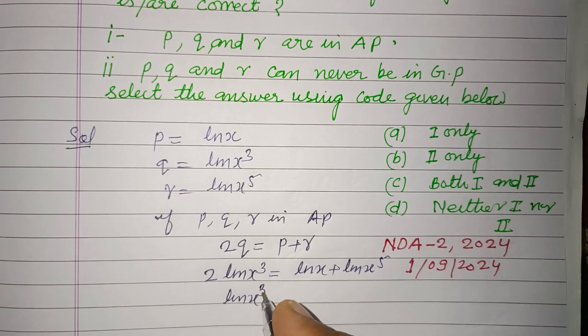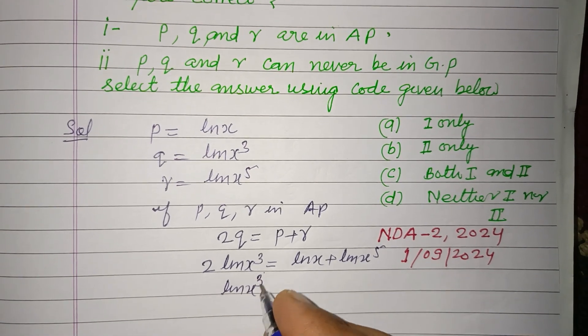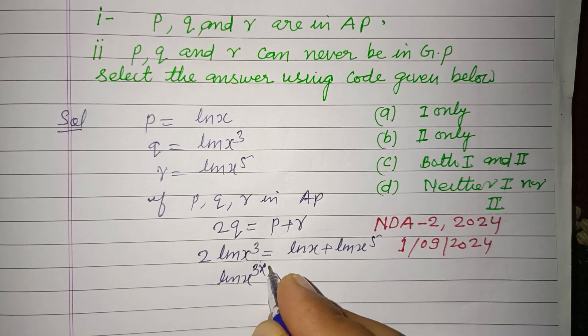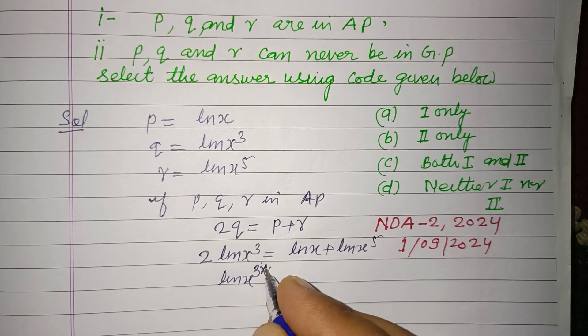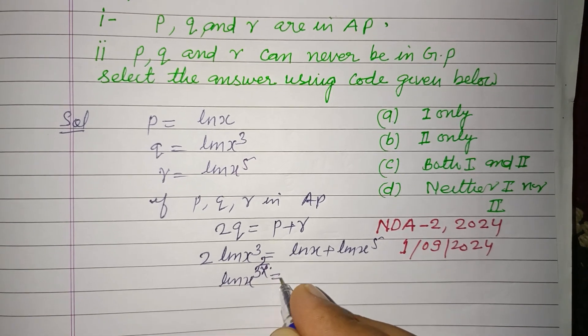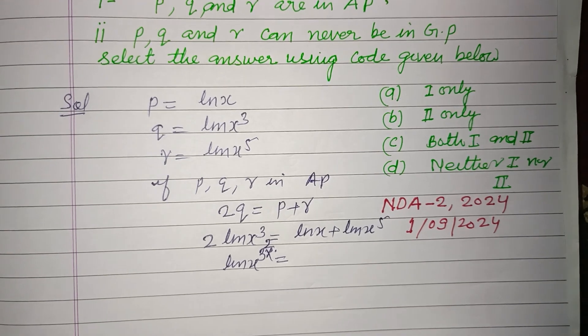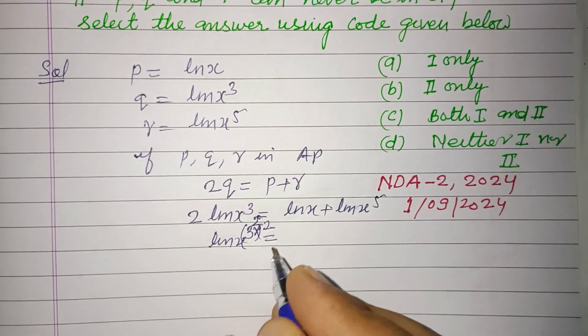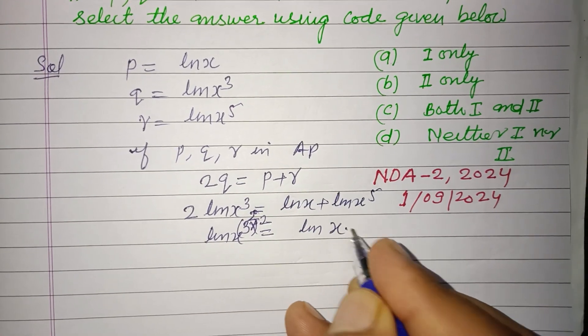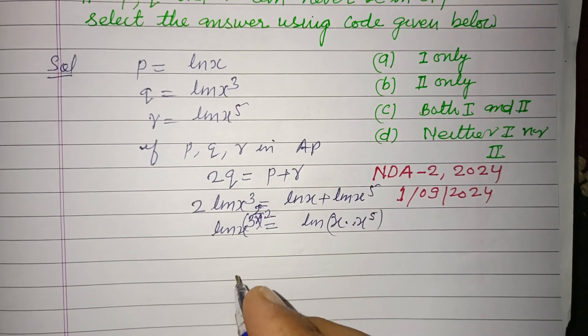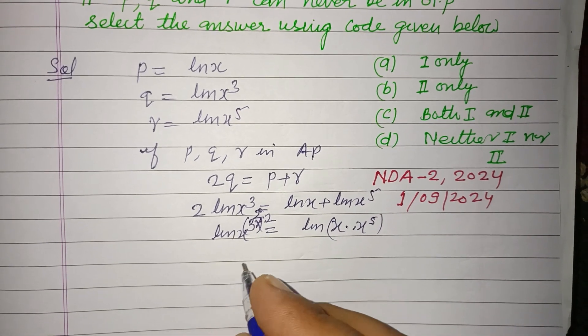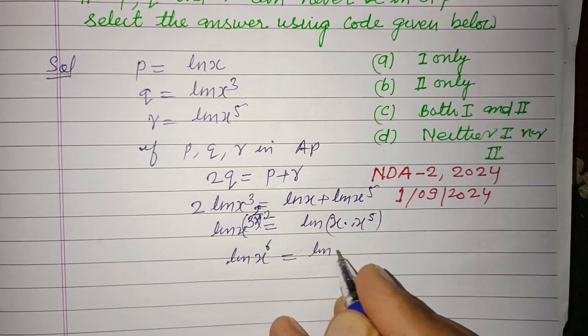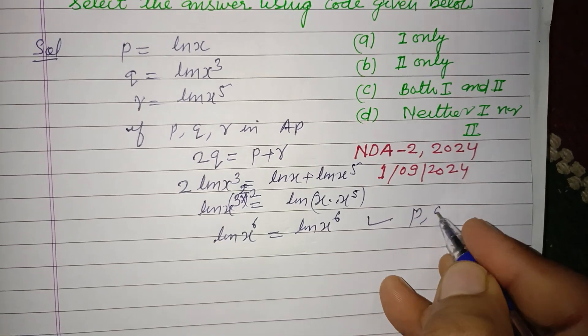This becomes 2·ln(x²) whole squared... this becomes ln(x)·x to the power 5. So this is ln(x⁶) and this is ln(x⁶). Yes, p, q, r are in AP.